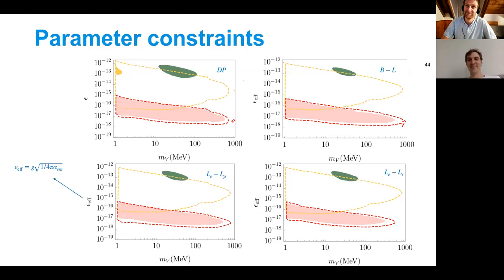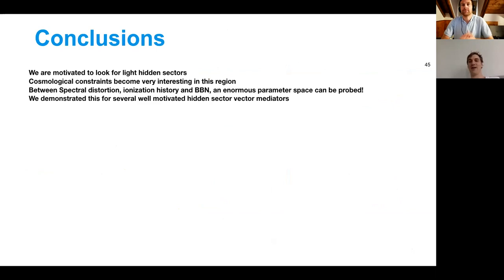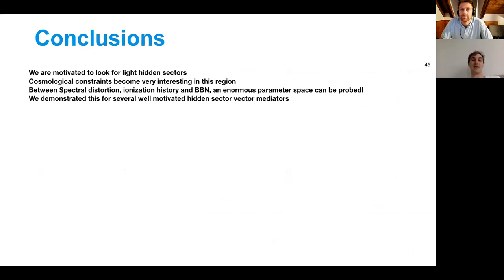In conclusion: we're motivated to look because we know dark matter exists, we know that particles exist at the MeV scale, which is a hint that maybe a dark particle could exist there, and this is where constraints are quite weak but cosmological constraints become the most interesting. We've looked at doing this more carefully in both a model-independent and model-dependent way.